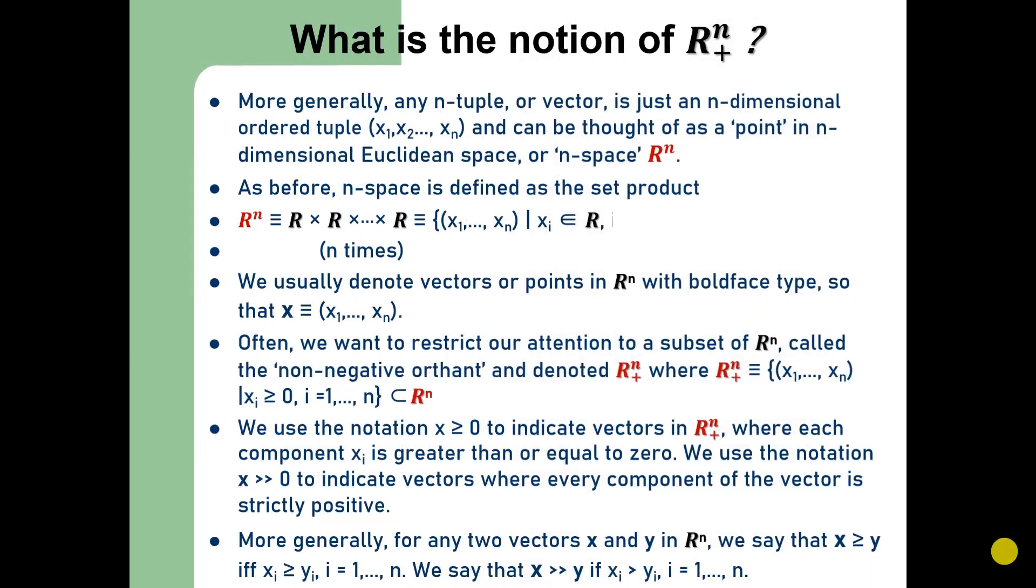This is the notion of n-space R^n or n-dimensional Euclidean space, and this is widely used in consumer theory as well as in producer theory. Later on when I upload other lectures on various topics in consumer theory and producer theory, we will be using the subset of Euclidean space, that is R^n_+, the non-negative orthant, instead of R^n.